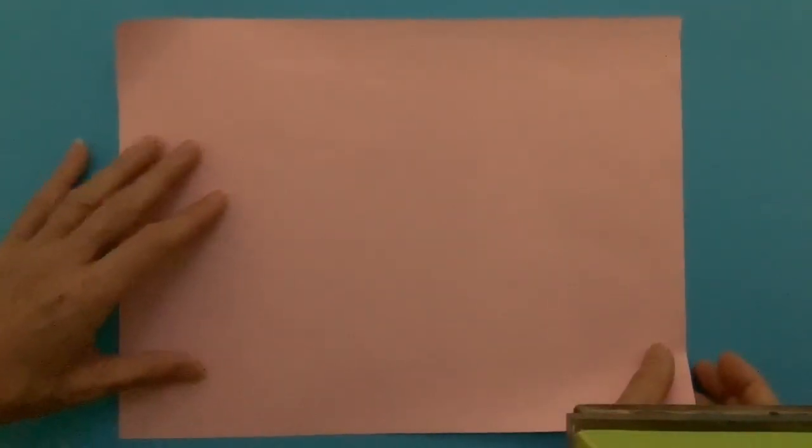I got the paper, letter size paper. One side is white and this one I have color on the back side so that you can see which side I am folding on.